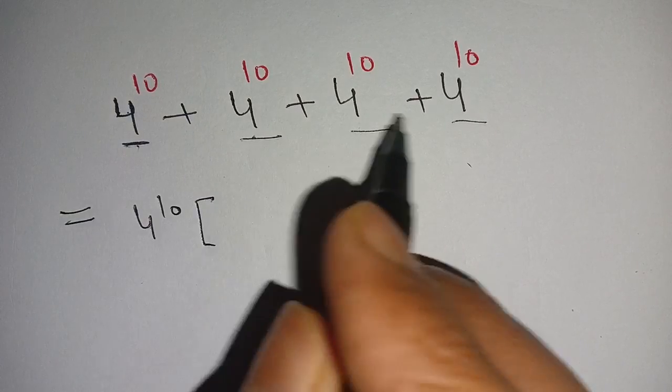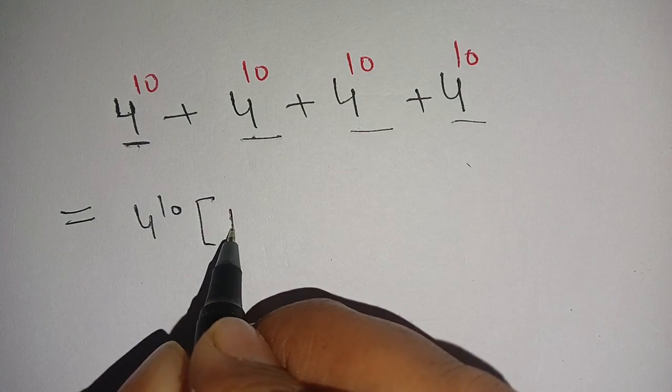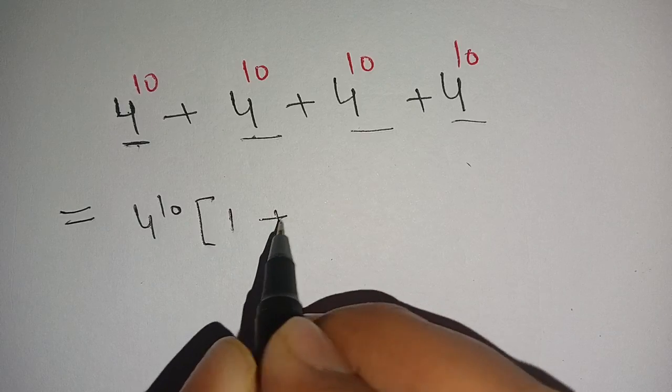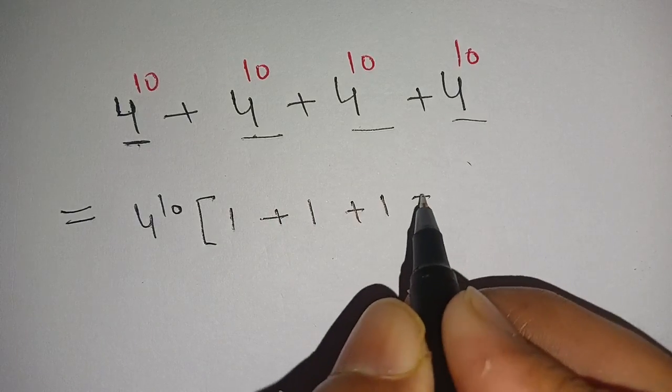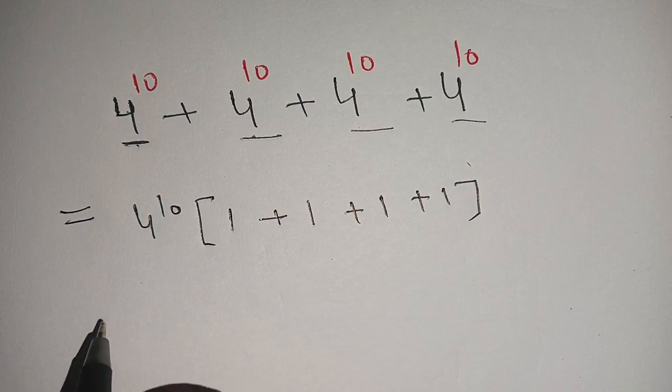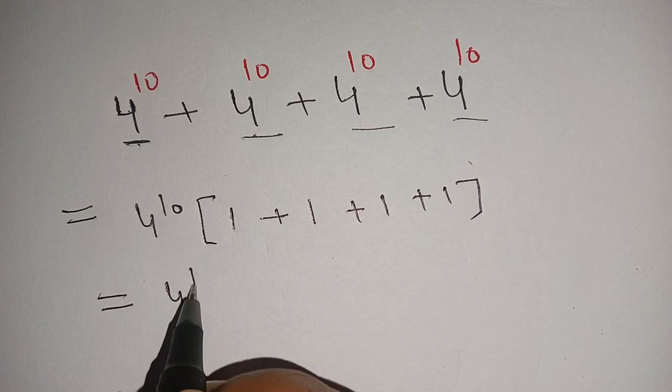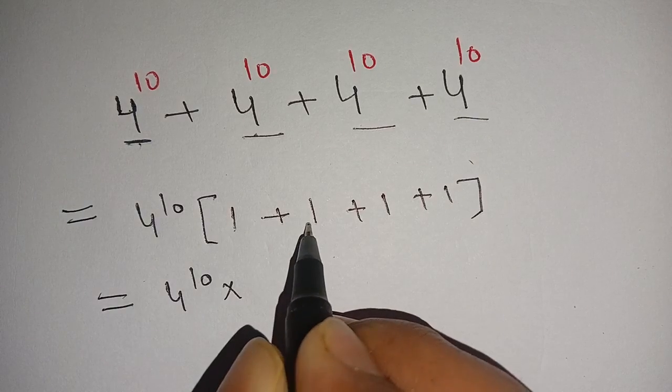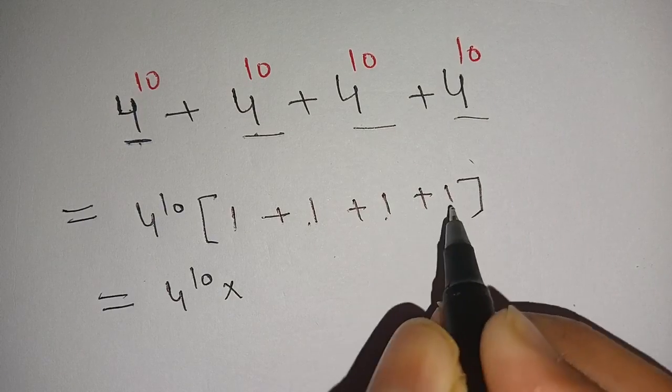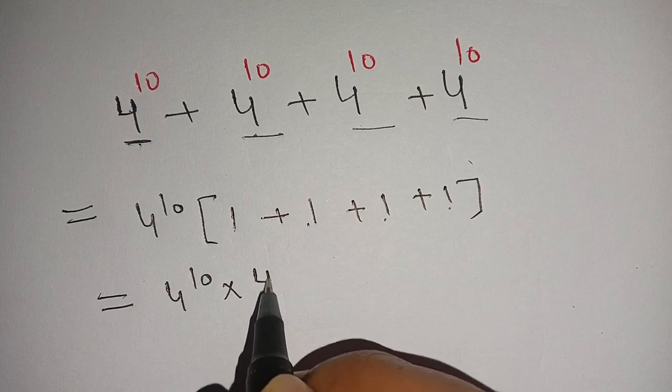The remaining is 1, 1, 1, 1. Now we have 4^10 times (1 + 1 + 1 + 1). We have 4^10 times [1+1=2, 2+1=3, 3+1=4], so it becomes 4.